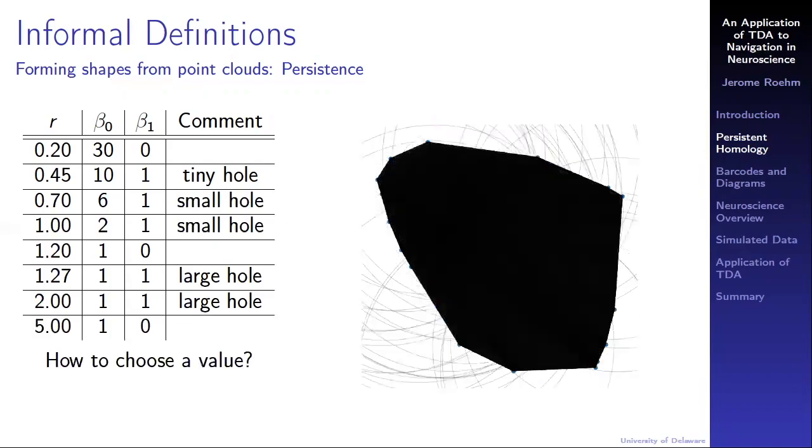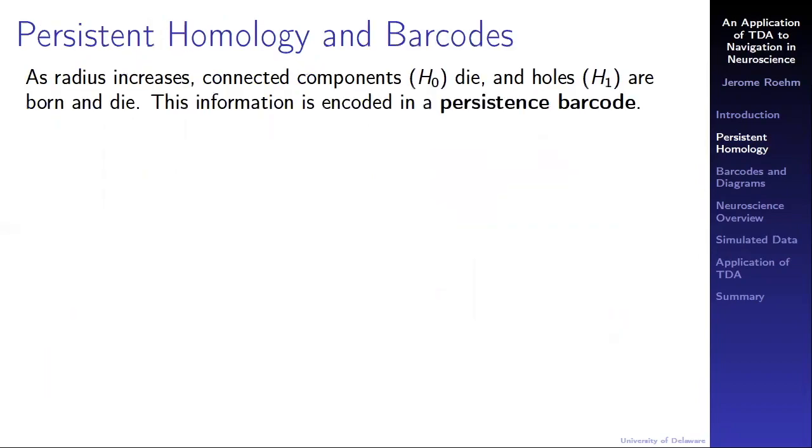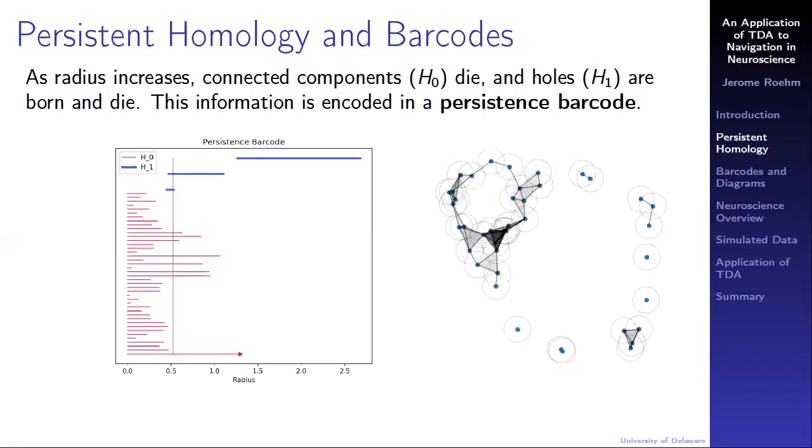The question is, how do we choose the best radius? Well, that's kind of a trick question. Persistence allows us to choose all the values. As detailed in the last slide, when we start gradually increasing the radius, connected components, elements of the zeroth homology, die as they become conjoined, and holes in the first homology are born and die. Through the structural theorem, this information can be recorded nicely in a persistence barcode. We see an example here. Let's start from the beginning.